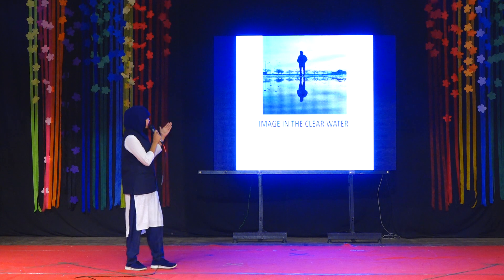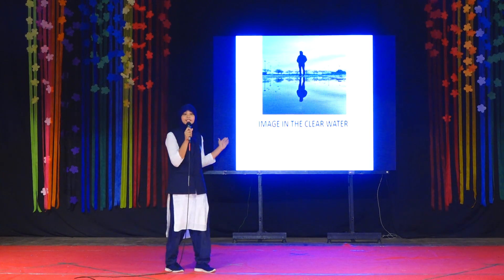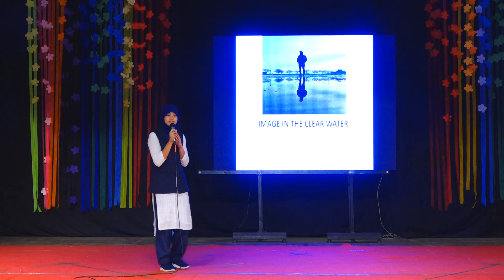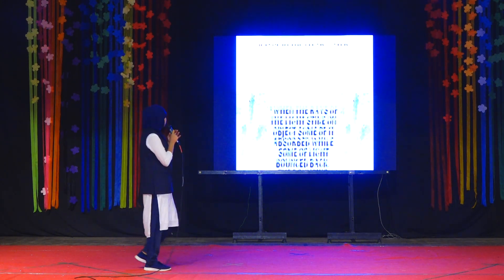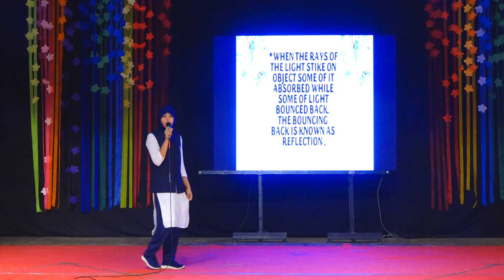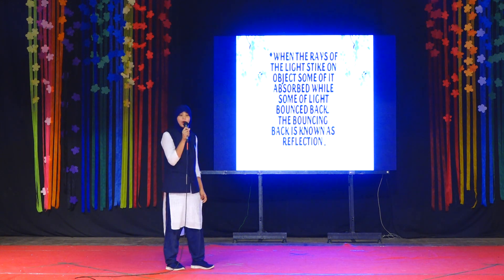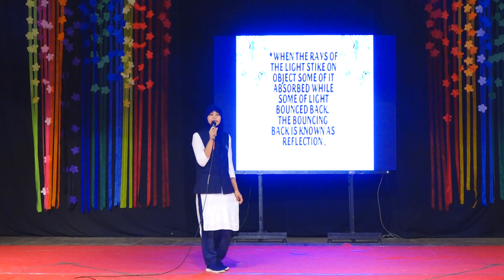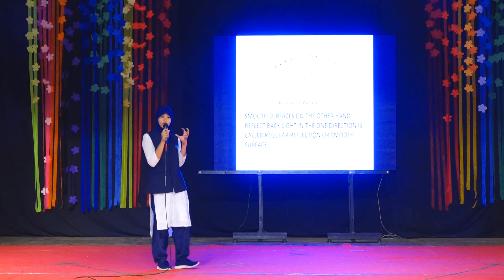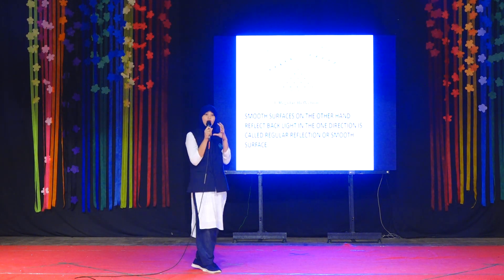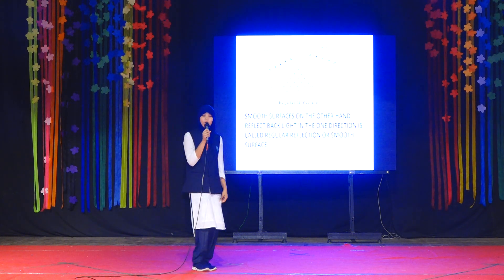You can see in this image how the reflection is produced. It has a smooth surface, so a clear reflection is produced. When the rays of light strike an object, some of it is absorbed and some of it bounces back. The bouncing back is known as reflection.